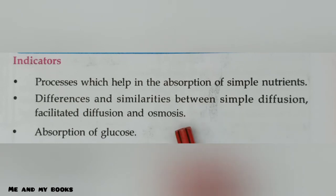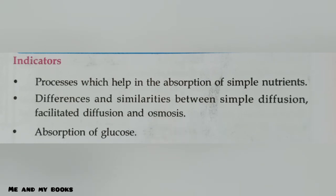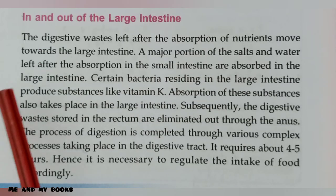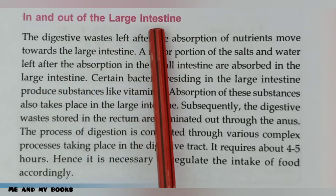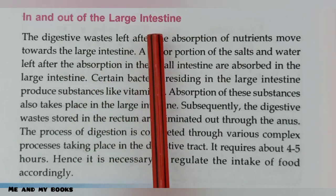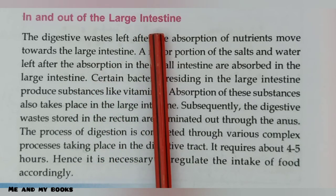Absorption of glucose takes place by facilitated diffusion. It also occurs through active transport. After digestion and absorption, the waste material moves to the large intestine.